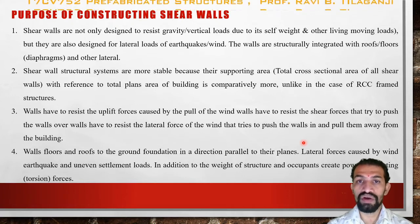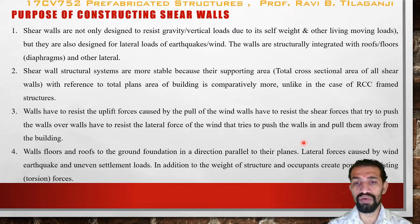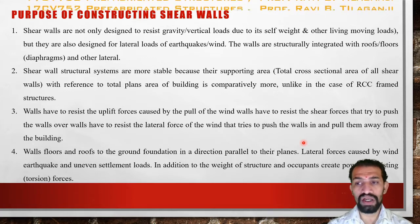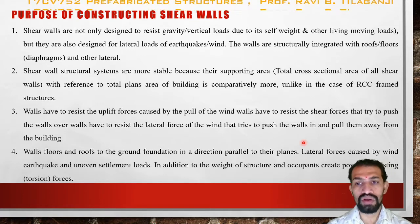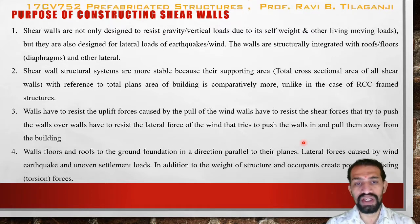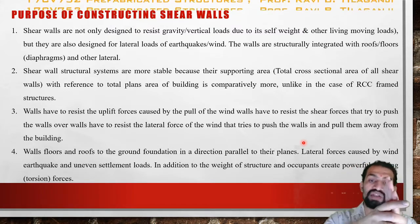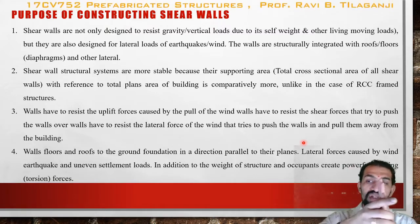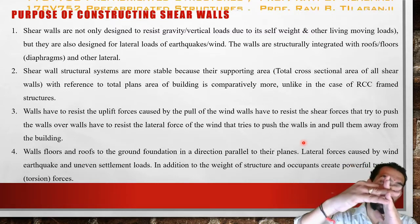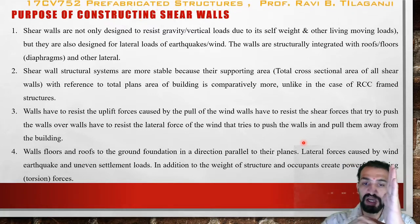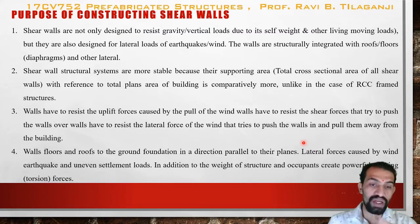Walls must resist uplift forces caused by the pull of the wind, shear forces that try to push the walls over, and lateral forces of the wind that try to push and pull them away from the building. When wind acts on a wall, it tries to push and pull it, which can cause dismantling at the ends. To prevent this, the wall is embedded and fixed at both ends and sides so it does not move with the wind.